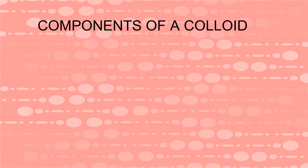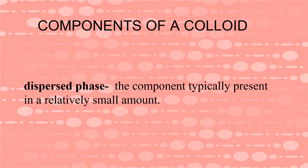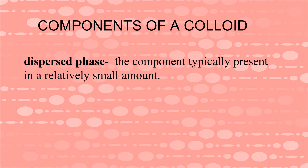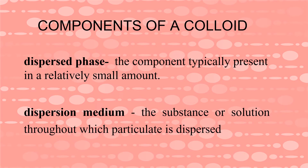What are the components of a colloid? First is the dispersed phase. It is the component typically present in a relatively small amount. And the dispersion medium — it is the substance or solution throughout which the particulate is dispersed.